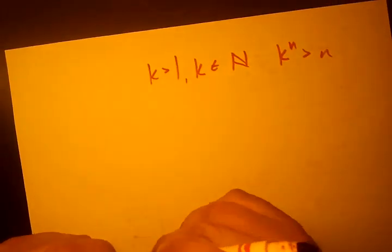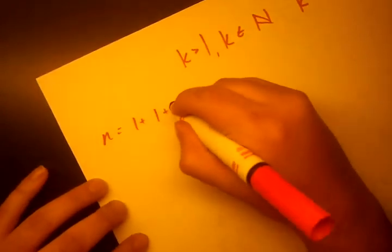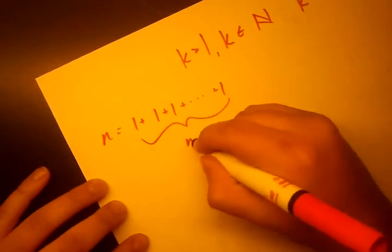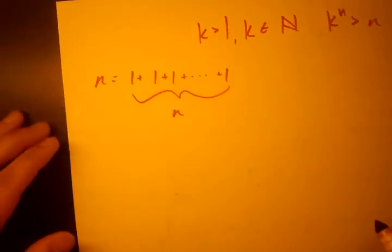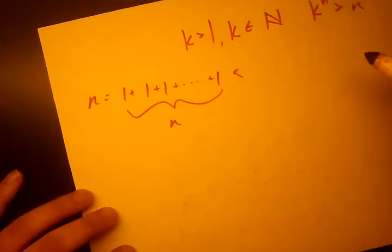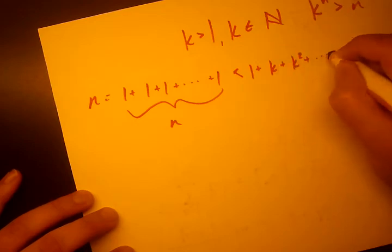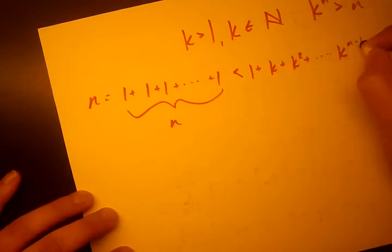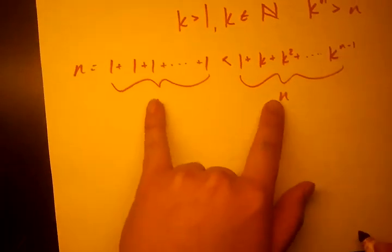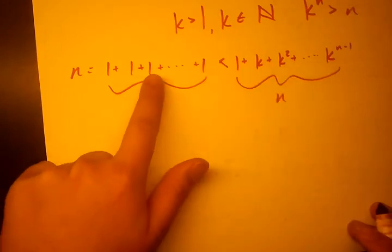So first let's write n as 1 plus 1 plus 1 plus dot dot dot plus 1. How many 1's are there? There's n. You can write any number like that, just split it up into a bunch of 1's. And that is necessarily less than 1 plus k plus k squared plus dot dot dot k to the n minus 1. And how many of these terms are there? There's n. So there's equal number of each of these terms, except k is greater than 1. So these are all greater than the subsequent 1's over here. So this is true.